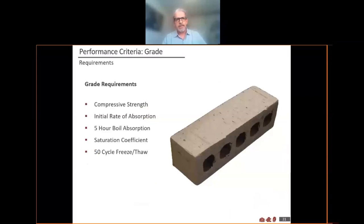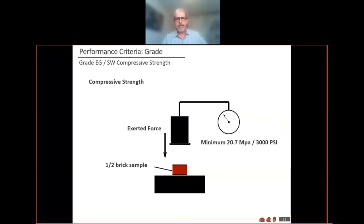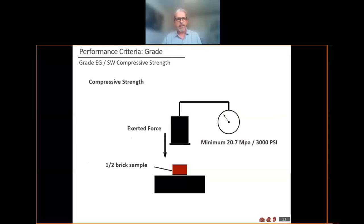Some of the things addressed in the standard are compressive strength, the initial rate of absorption, 24-hour cold and 5-hour boil, the saturation coefficient or CB ratio, and freeze-thaw testing. Compressive strength is one that we always test to ensure compliance with the standard, but it is of probably the least concern in that brick as we deal with it is a veneer — it is not a load-bearing product, and the compressive strength results come out far higher than anything that CSA or ASTM calls for.